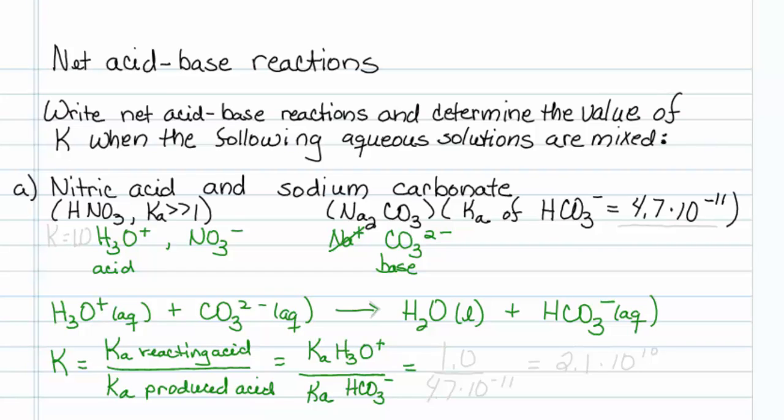For HNO3 Ka is much greater than 1, but if you look at the table, K is equal to 1 for hydronium. So this would be 1 over the Ka of hydrogen carbonate, which is 4.7 times 10 to the minus 11. So I'll put that in my calculator, and the value I get is 2.1 times 10 to the tenth power. So that is a very strong reaction, and it will proceed all the way to the right.